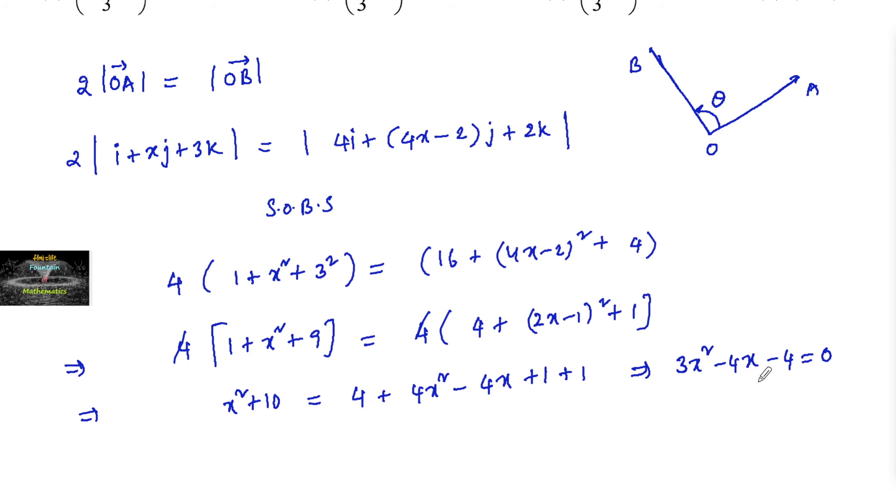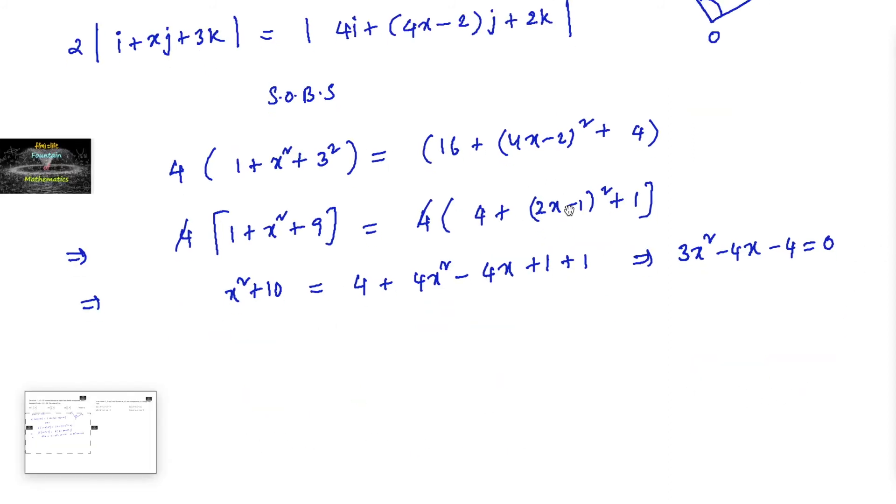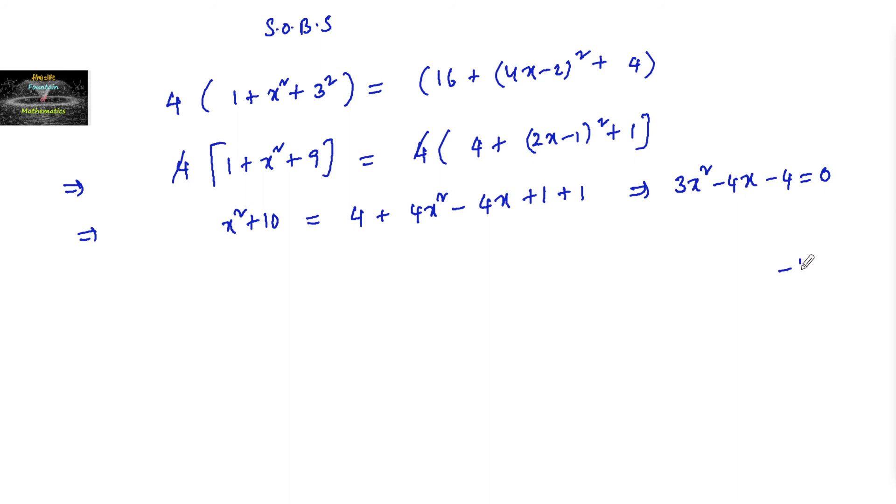On simplifying we can write 3x squared minus 6x plus 2x minus 4 equals 0. By taking 3x common we get x minus 2, and taking 2 common, x minus 2 is equal to 0. So we'll get x is equal to 2 and x is equal to minus 2 upon 3.